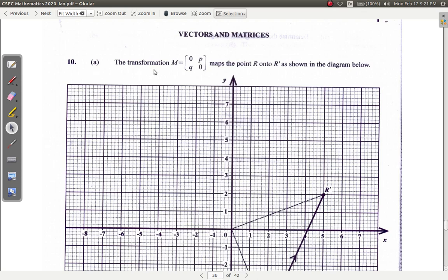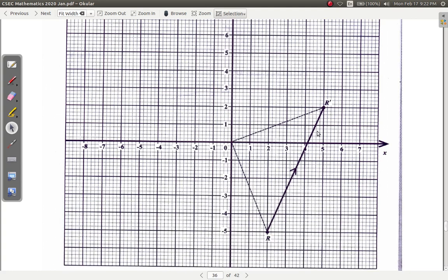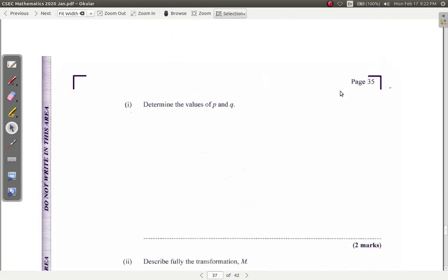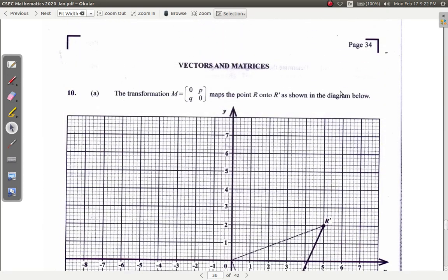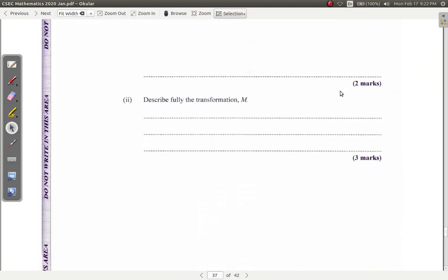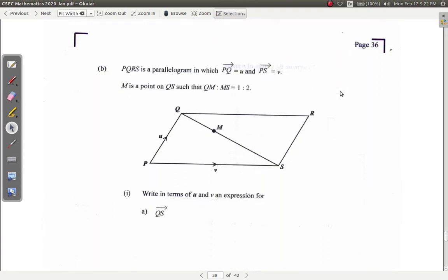It's question 10. You look at question 10 and it says the transformation is a vector. It maps r onto r prime shown in the diagram below. What they're saying is that you should determine the value of p and q. That's matrices and transformation. Describe fully the transformation m.